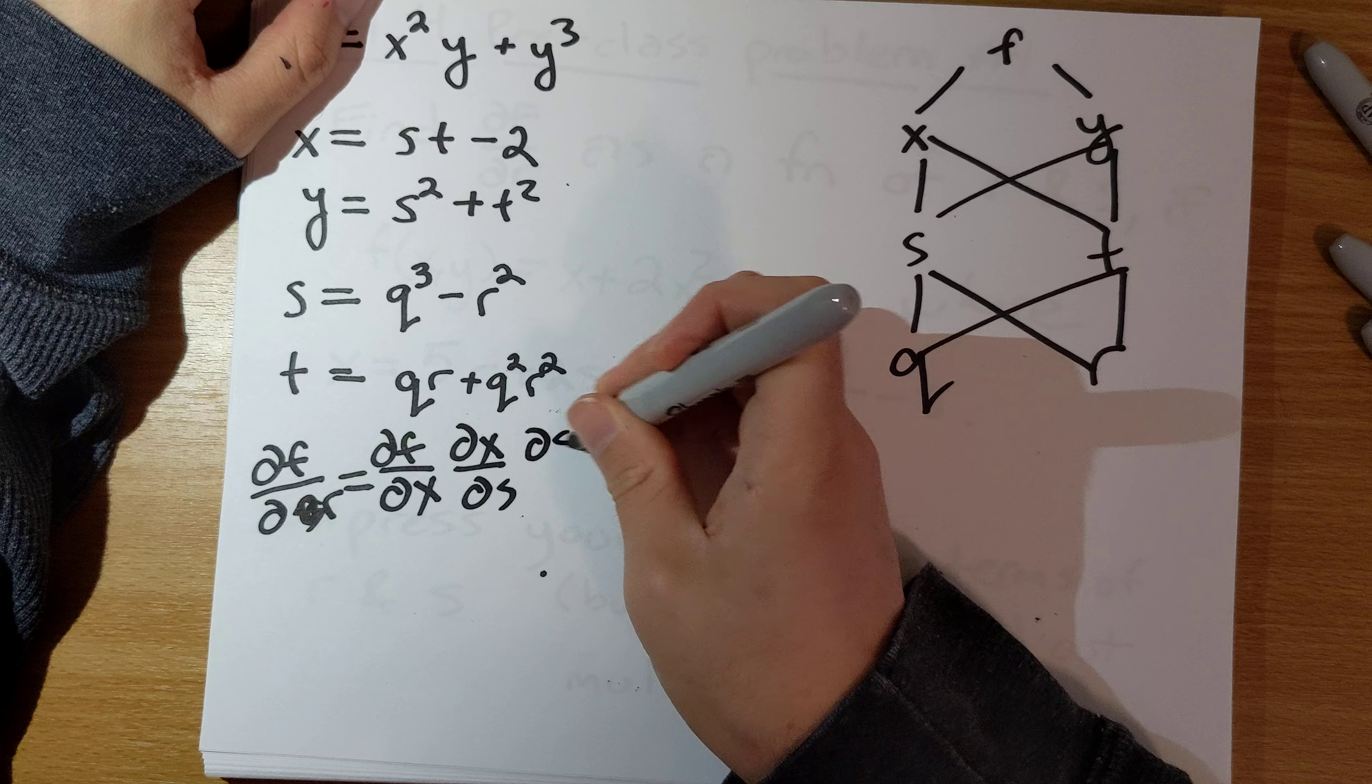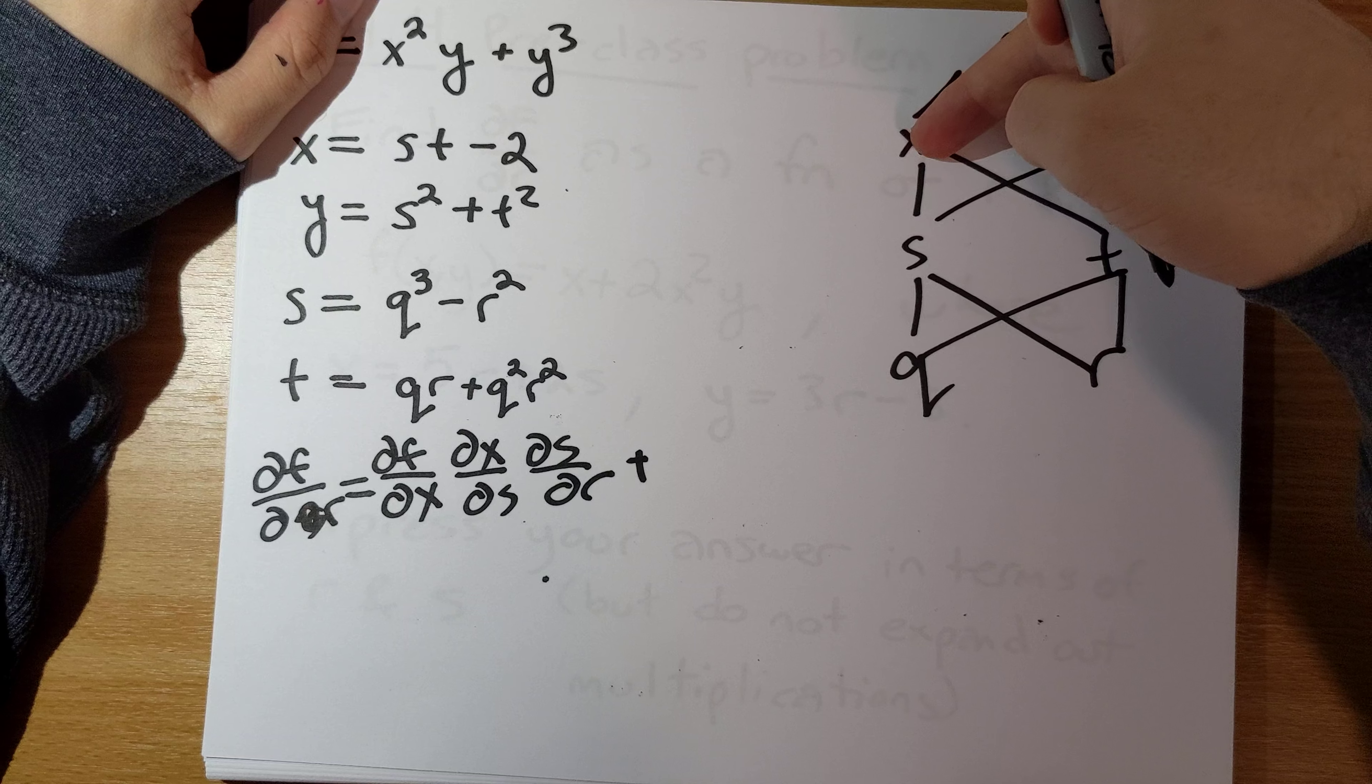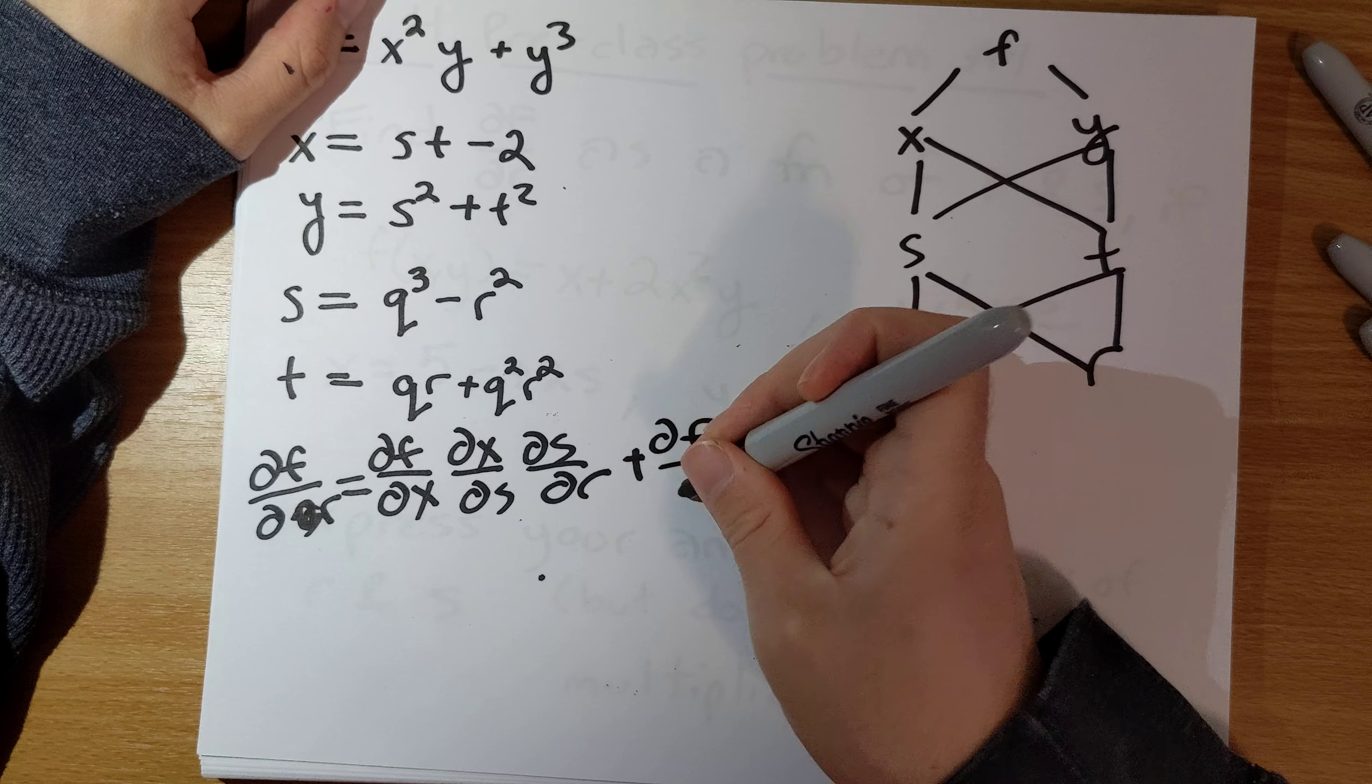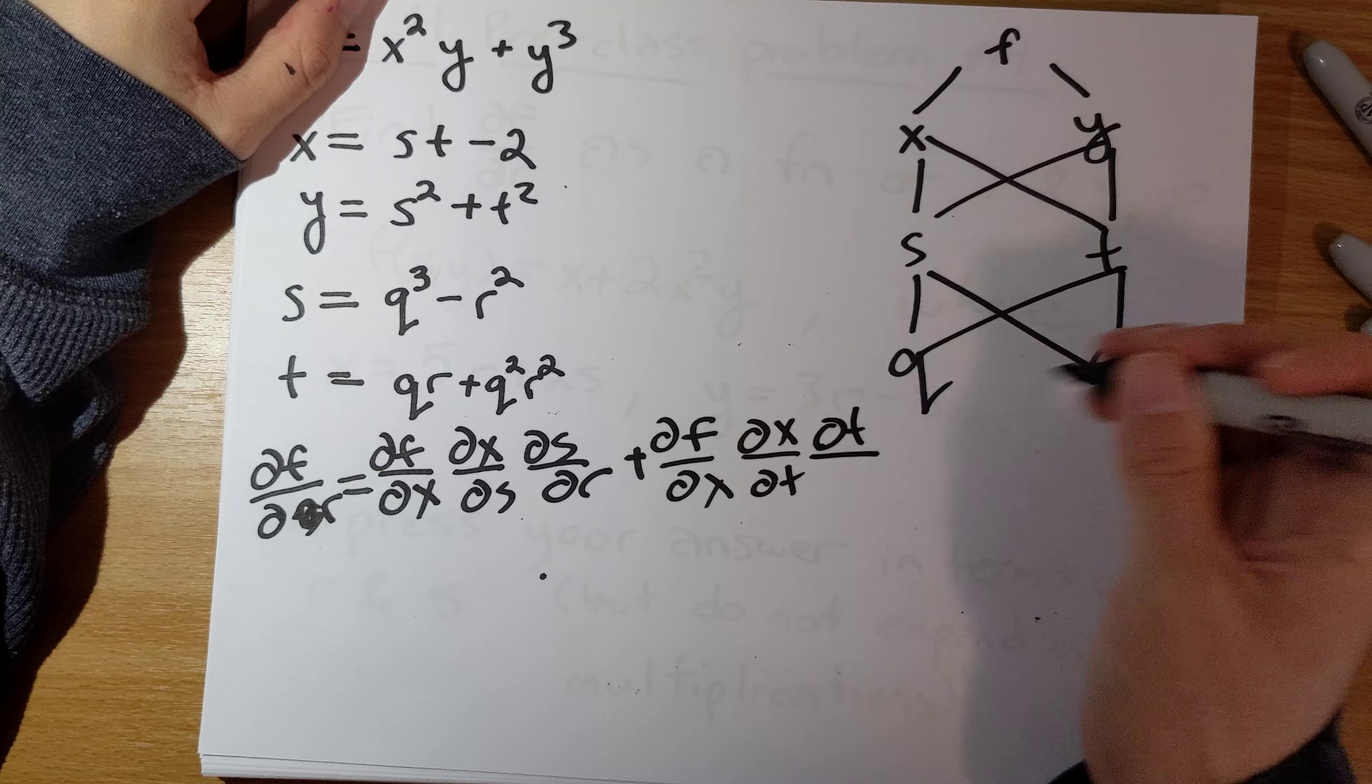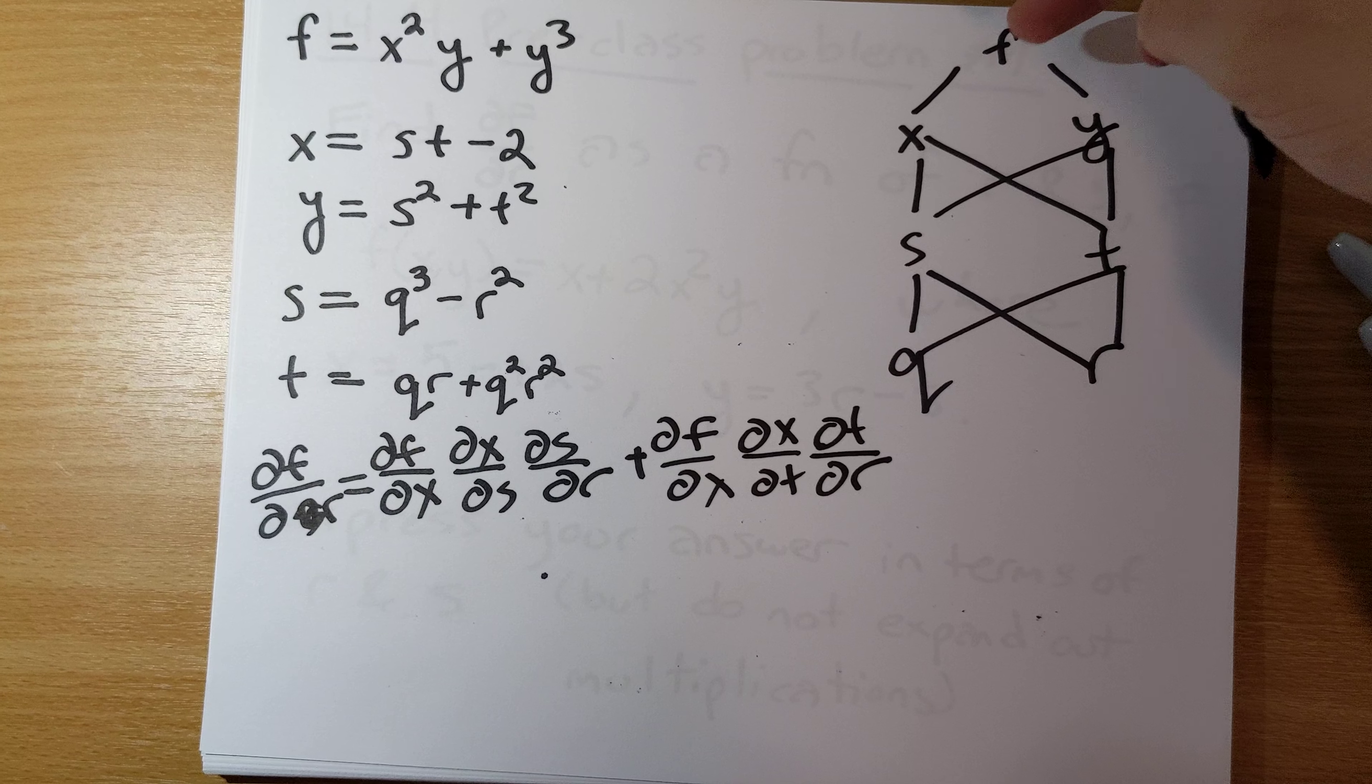We can go f to x to t to r, partial f partial x partial x partial t partial t partial r. Or we could go f to x to r.